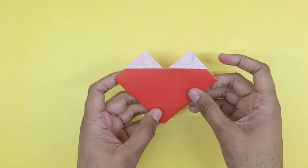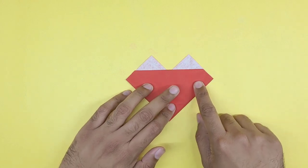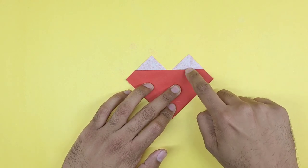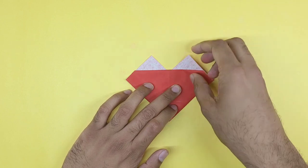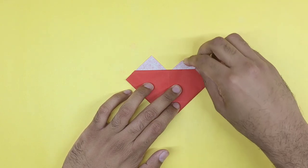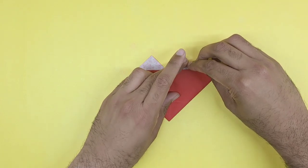Flip the paper over to the opposite side. Now you will fold the top points, fold the right side and then the left side.